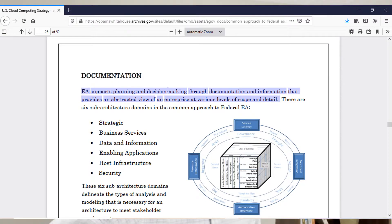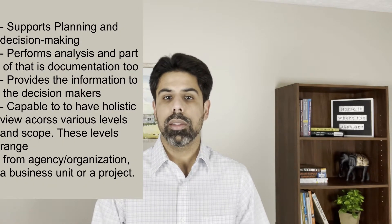Now let's go to the next definition. This definition is by FIAF — the Federal Enterprise Architecture Framework used by the U.S. federal government. According to FIAF, enterprise architecture supports planning and decision making through documentation and information that provides an abstracted view of an enterprise at various levels of scope and detail. This definition describes EA as someone who is providing analysis and really supporting the whole decision-making process.